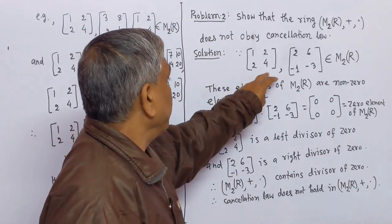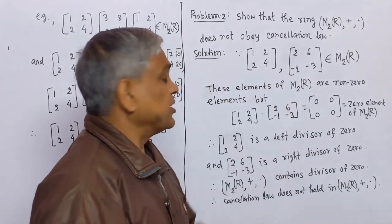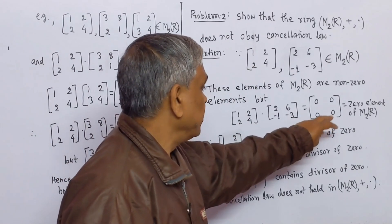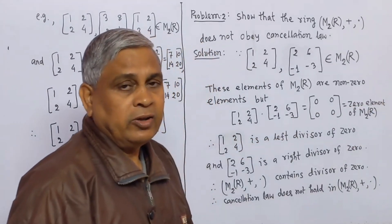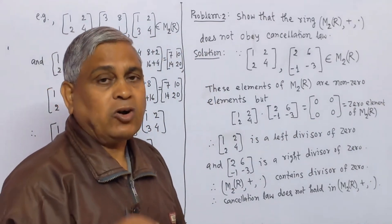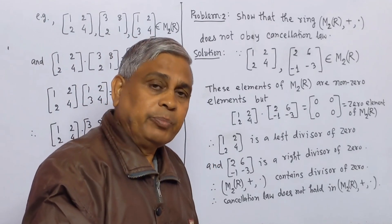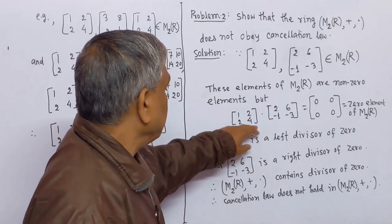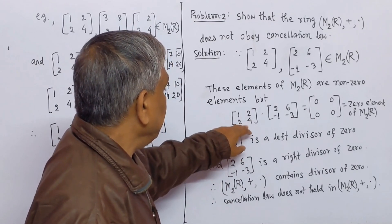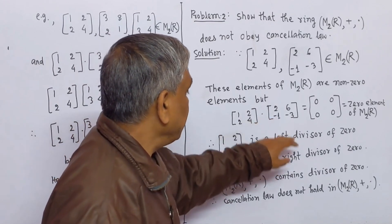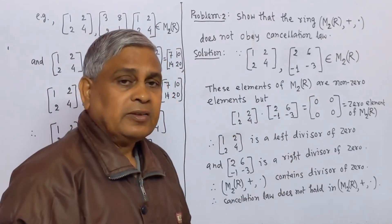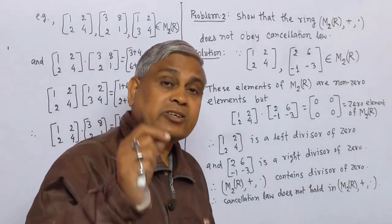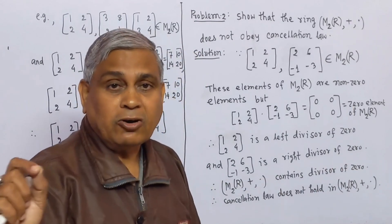Since these two matrices with entries 1, 2, 2, 4 and 2, 6, -1, -3 are non-zero matrices, but their product is a zero matrix — the zero element of M2R. The product of two non-zero elements of a ring gives the zero element. That means the first is a left divisor of zero, the second is a right divisor of zero, so the ring contains a divisor of zero. We know that if a ring contains a divisor of zero, cancellation law does not hold.